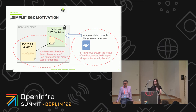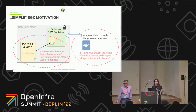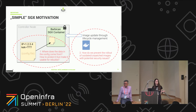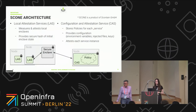The second question is about lifecycle management: maybe we want to update the Barbican image because there's a security issue. How do we prevent the rollout of outdated or unpatched images? To address these questions, we used SCONE from SCONTAIN. Let me give you a short overview of the architecture.